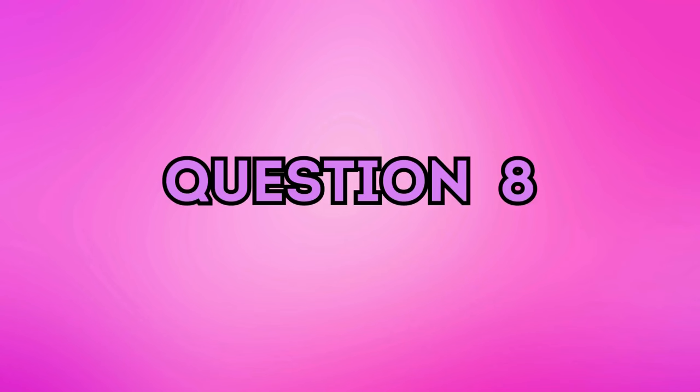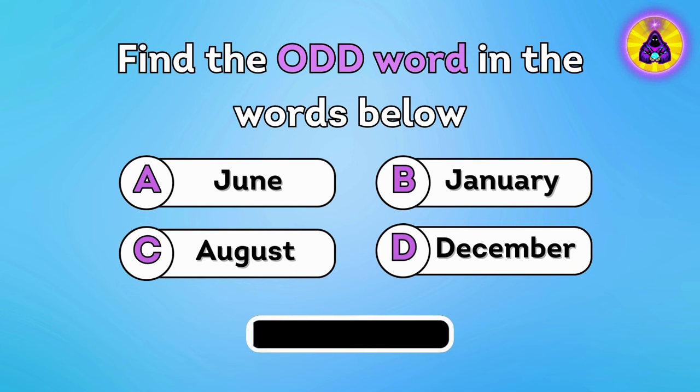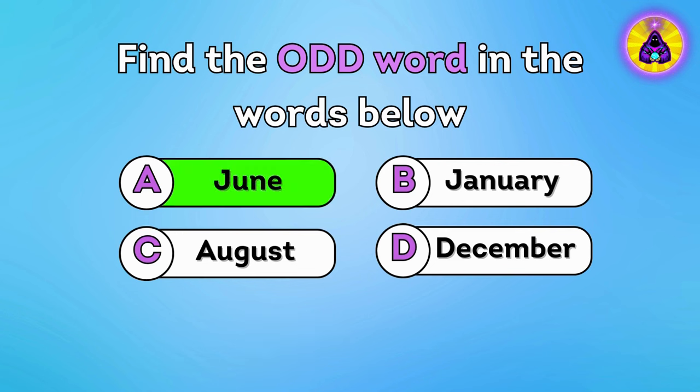Question number 8. Find the odd word in the words below. The odd word is June because it's the only month that has only 30 days. January, August, and December has 31.